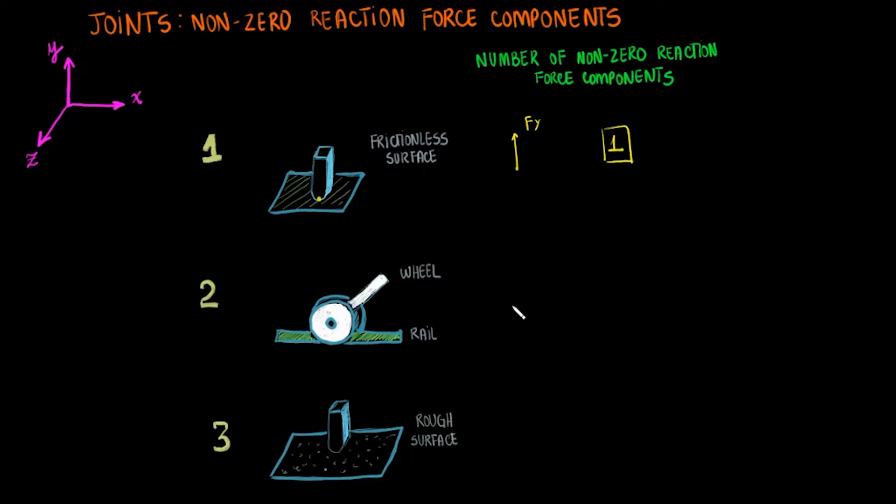In this next example, we will have a wheel on a rail. Assume that the wheel can move along the x direction. Then, the wheel will be in contact with the rail at three points, up top causing a reaction force along y and on both sides causing two force components along z. This completes a total of three non-zero reaction force components.